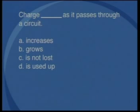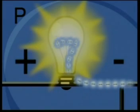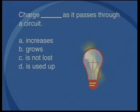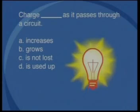Again, I want you to fill in the missing word. Charge A increases, B grows, C is not lost, or D is used up as it passes through a circuit. I'm going to give you a small hint. Have a look at this animated model. The answer is C. At no stage will charge ever be lost as it passes through an electrical circuit.